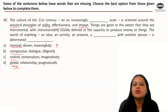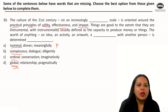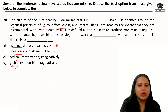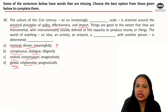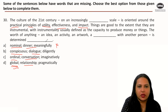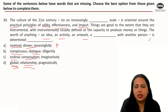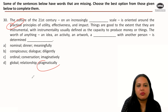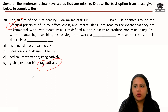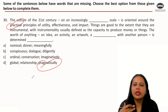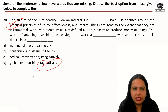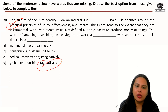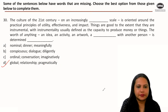For the second blank: whether it is art, an idea, an activity, or a relationship with another person — the worth is determined 'pragmatically.' Pragmatically is a synonym of practical. Because we have become so practical, we evaluate even our relationships on whether we can get money or value out of them. So the correct answer to this question is option D.